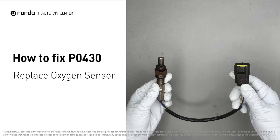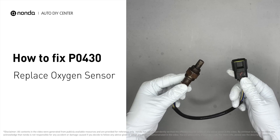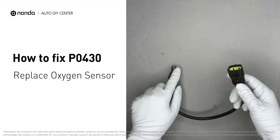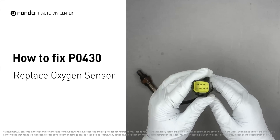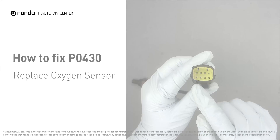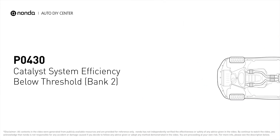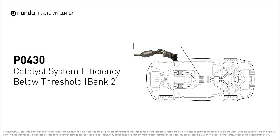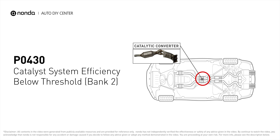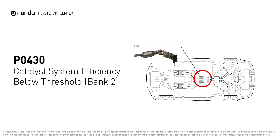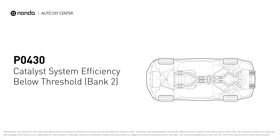By replacing the damaged oxygen sensor, you can easily fix the P0430 error code by yourself. P0430 means your catalyst system efficiency is below threshold near engine bank 2, which indicates that the catalytic converter is not functioning efficiently, so the vehicle is increasing the output of harmful pollutants.